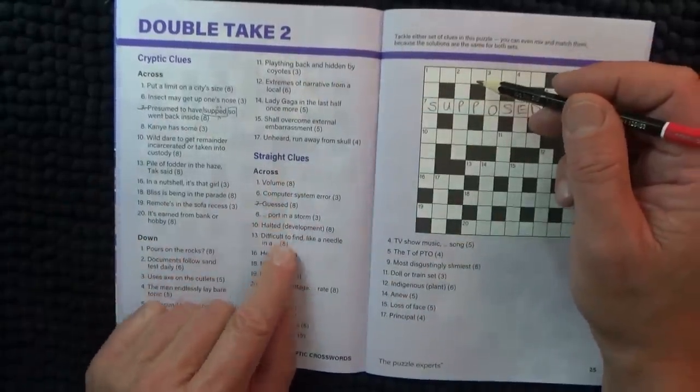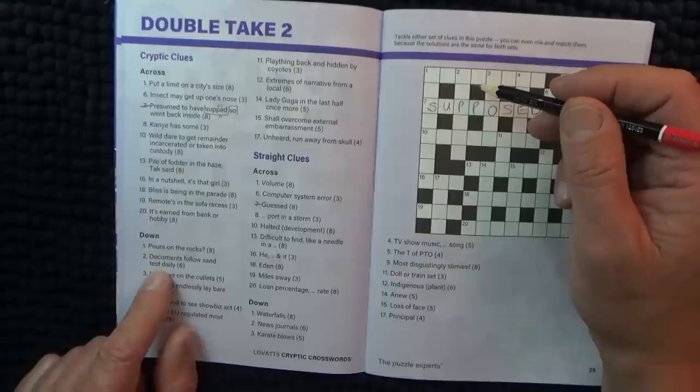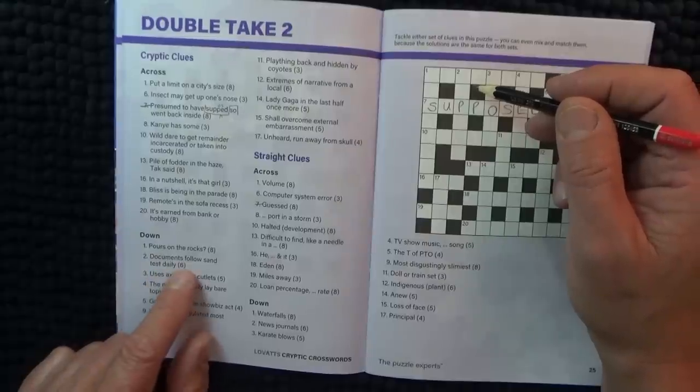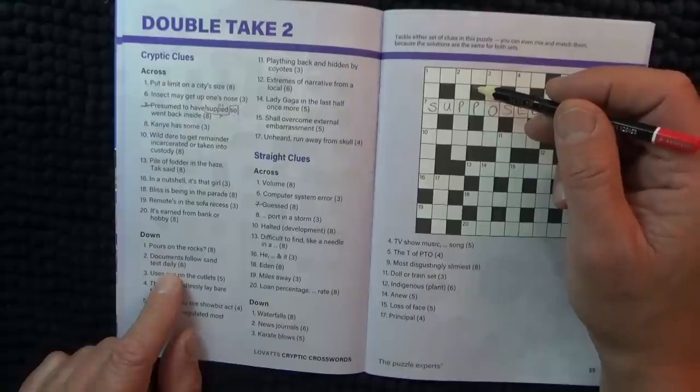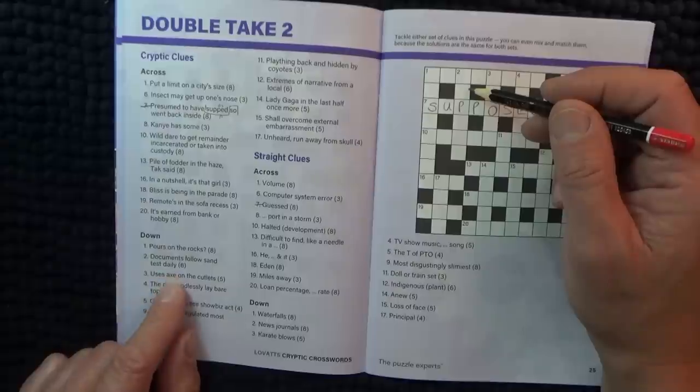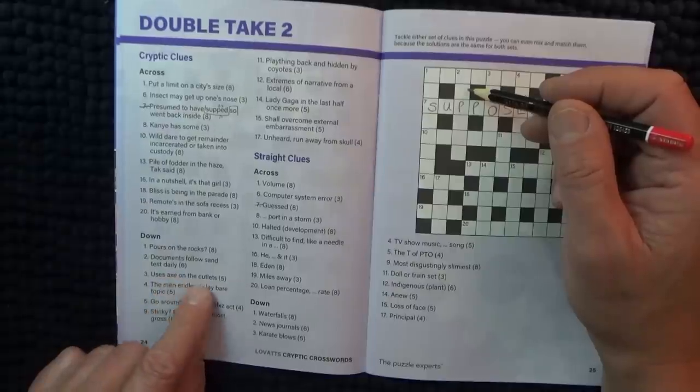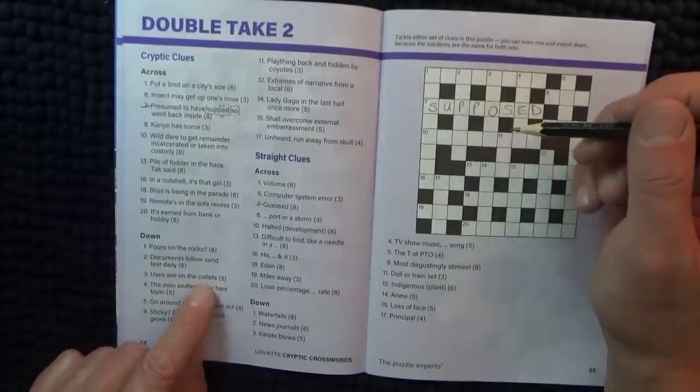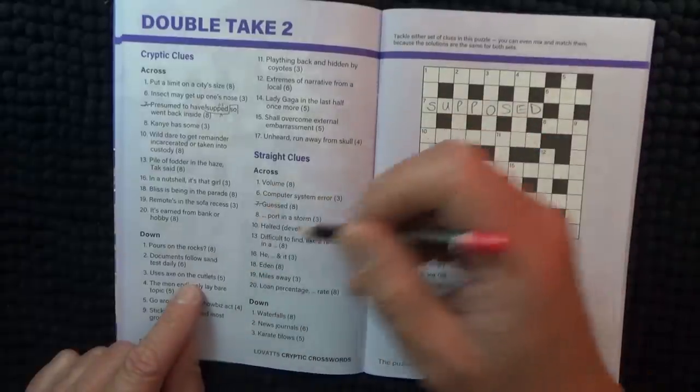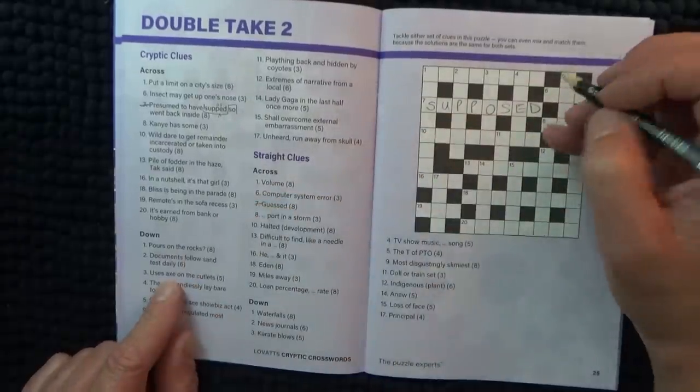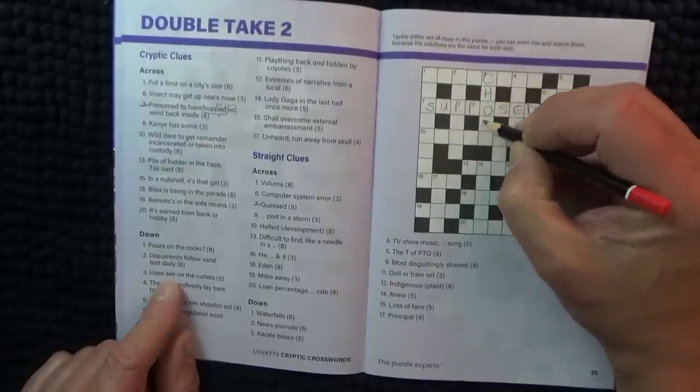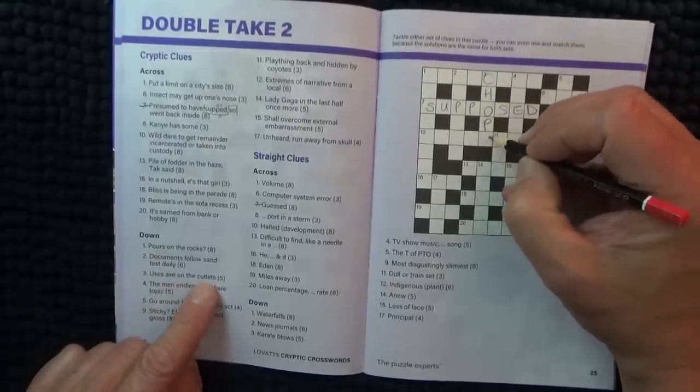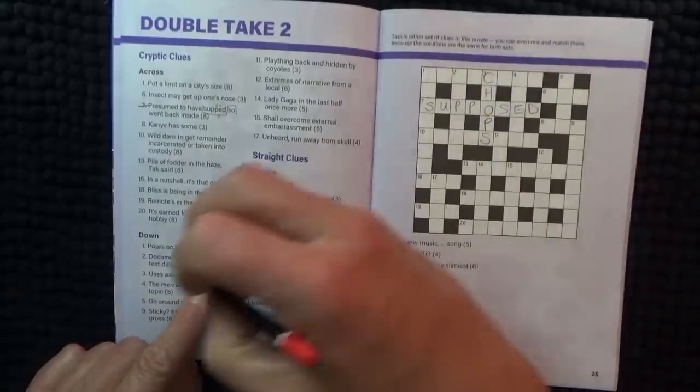And guest is supposed as well. I'll try some of the downs. Documents, sand, test, daily. Uses axe on the cutlets. So when you use an axe you chop.